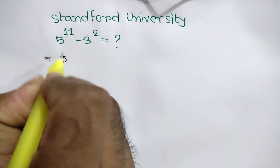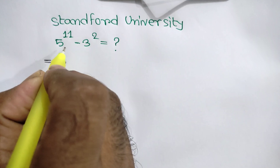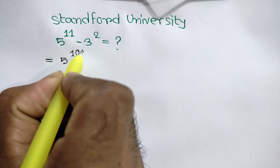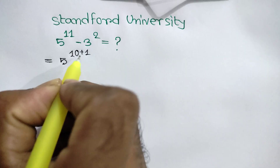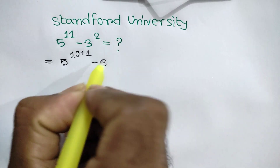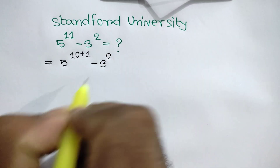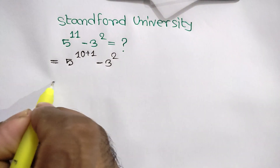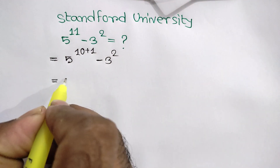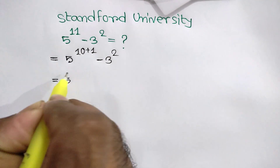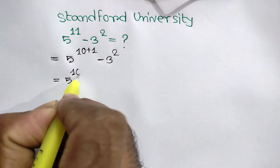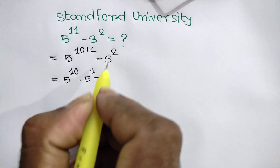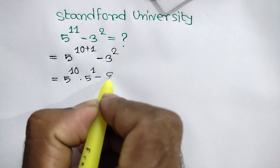Now 5 to the power 11 can be written as 10 plus 1, so we can write 5 to the power 10 times 5 to the power 1, minus 3 squared.